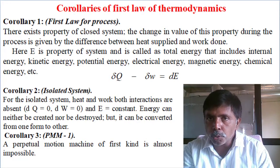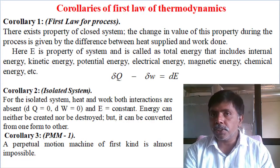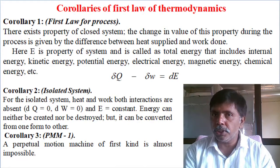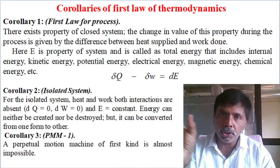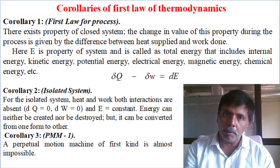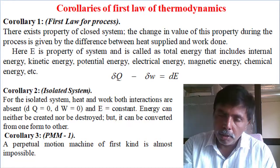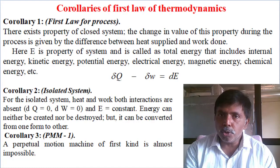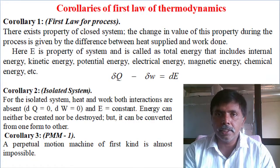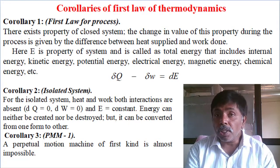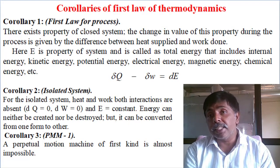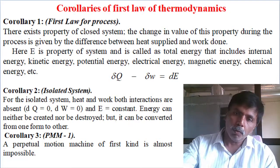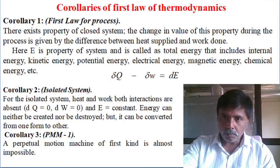So the three findings are: first, energy in minus energy out equals change in energy — in a closed system this is change in internal energy, in an open system it is change in enthalpy including flow work, kinetic energy, and potential energy. Second, for an isolated system, energy is constant. Third, violation of the first law — perpetual motion machine of the first kind — is practically not possible.